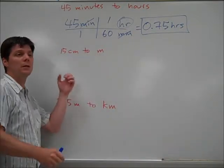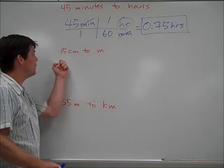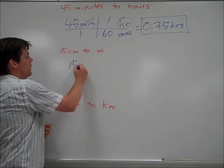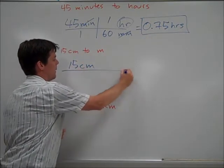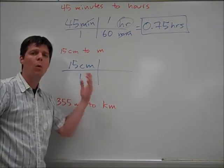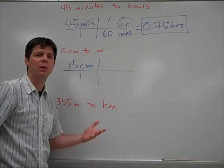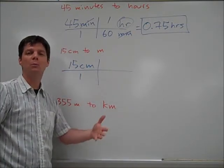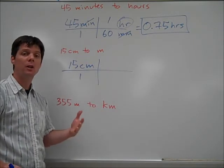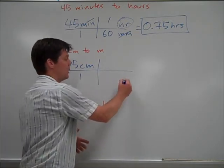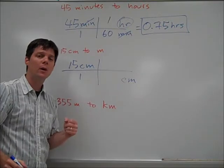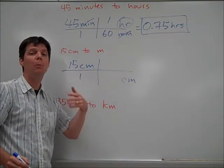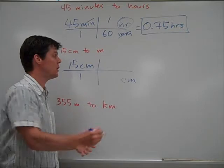Again, to set this up, I'm going to take the number that I've been given, 15 centimeters, and we're going to write that over 1 just to put this in fraction form. Now I want to put in the units. The unit I want to cross-cancel is centimeters. So that's going to go down here in the denominator. In the numerator, I'll put the unit that I'm trying to convert to.